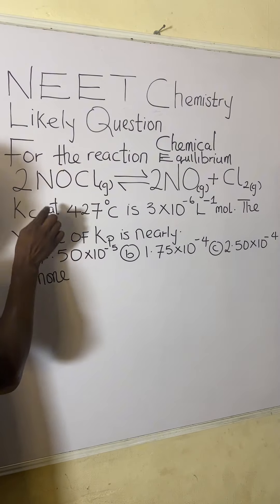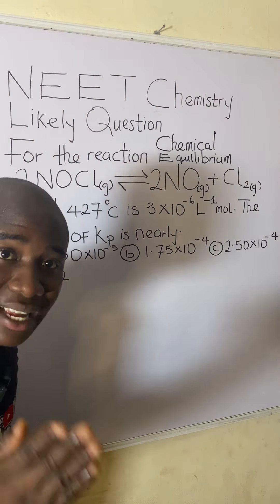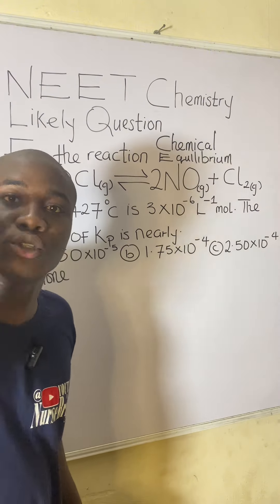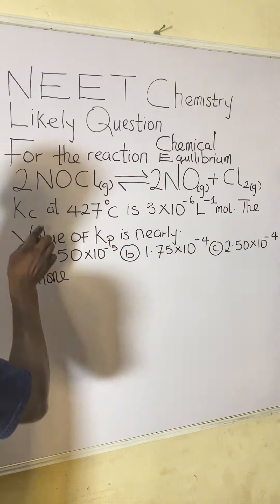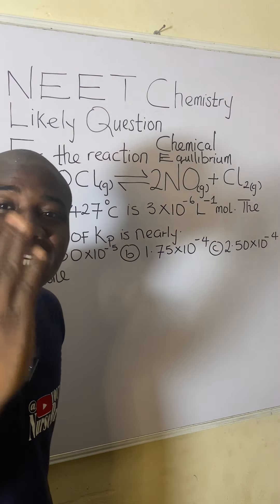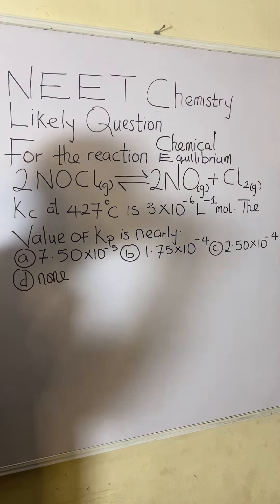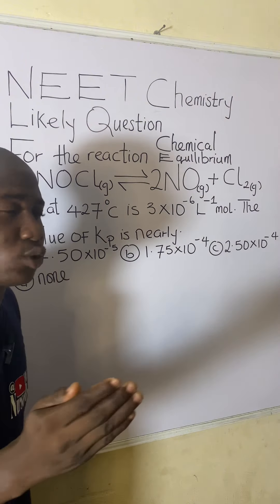Kc at, note, Kc means equilibrium constant expression written in terms of concentration. Equilibrium constant expression written in the terms of what? Concentration. C here means concentration.